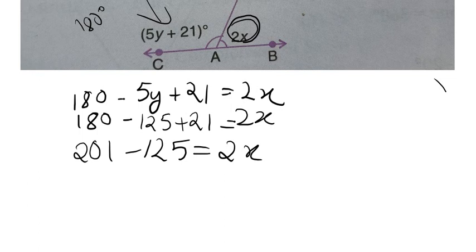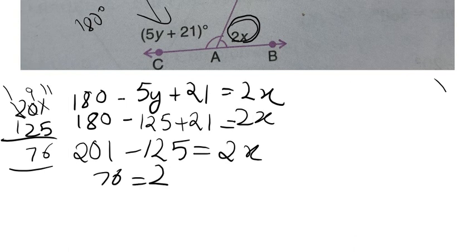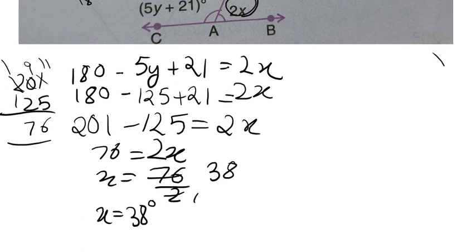180 and 21 will be 201 minus 125 is equal to 2x. So, 201 minus 125 is going to be, this 1 becomes 11, this 0 becomes 9, this 2 becomes 1, 11 minus 5, 6, 9 minus 2, 7, 1 minus 1, 0, 76. 76 is equal to 2x, so x is equal to 76 upon 2 and x is equal to 38 degrees. And this becomes our answer, that is x is equal to 38.